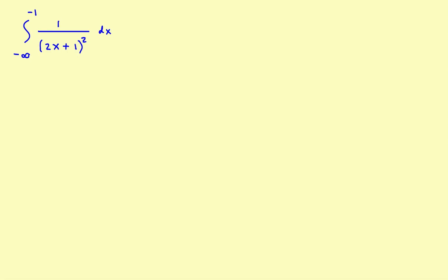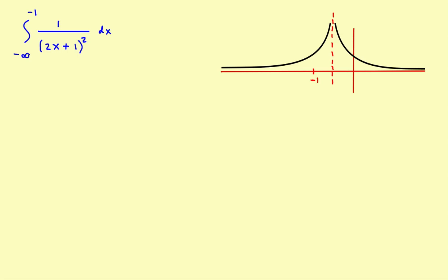First of all, let's take a quick look and see what the problem looks like — what the graph of it is. The graph would look something like this. You can tell from the denominator that you'd have an asymptote at x equals negative one. In our problem what we really want is to find the integral from negative one down to negative infinity. You can think of it as starting right at negative one and finding the area under this curve as we go off toward negative infinity.